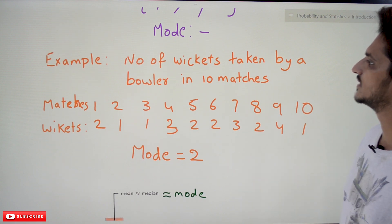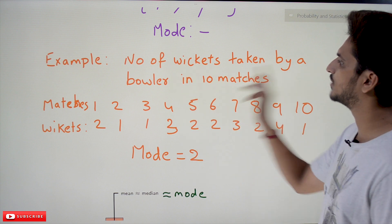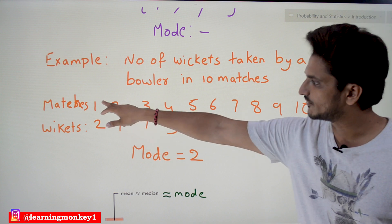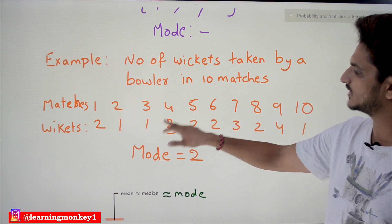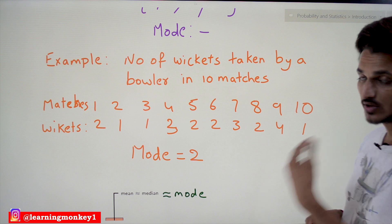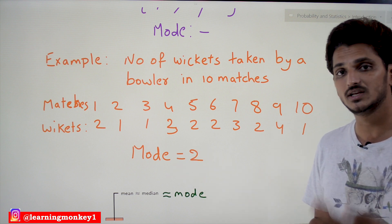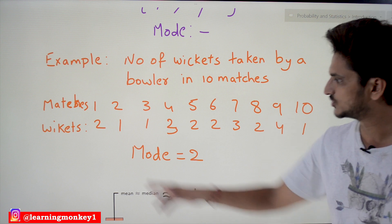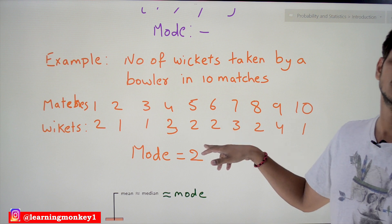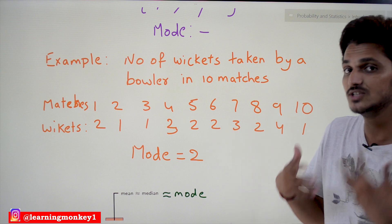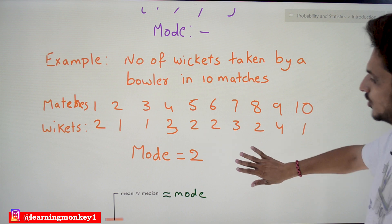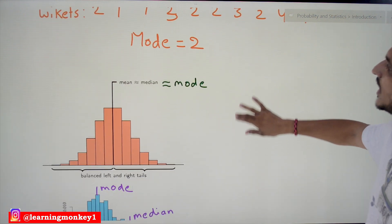Now let's take a real-world example: the number of wickets taken by a bowler in ten matches. The data across matches 1 through 10 includes values like 2, 1, 1, 3, 2, 2, and so on. The value 2 appears most frequently — four times. So mode = 2, meaning on average he is going to take two wickets per match.